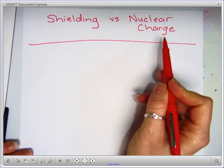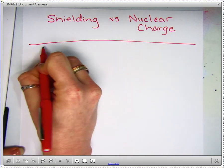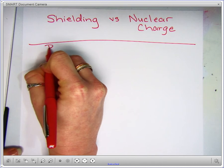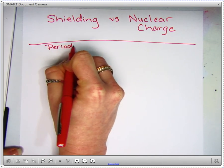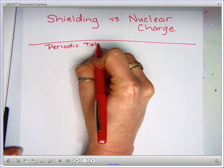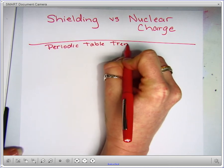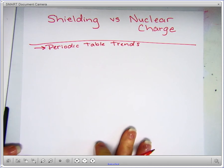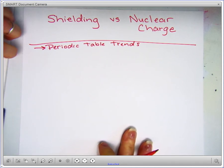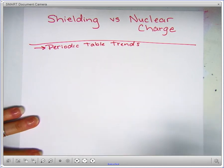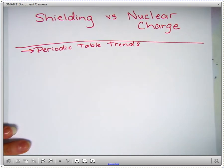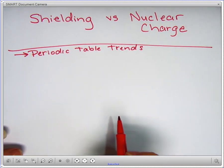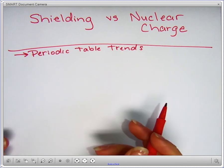These two concepts are important to be able to make sense or understand many of the periodic table trends. So this is essentially kind of background information that we need in order to be successful with predicting trends for the different things that we've already looked at.